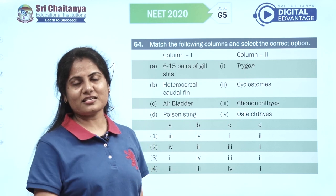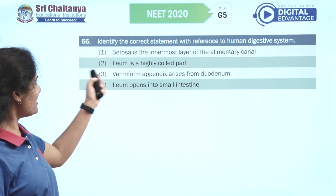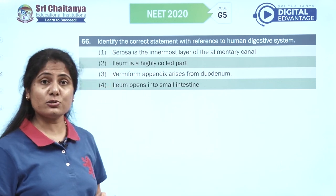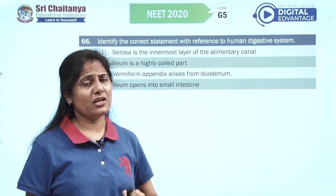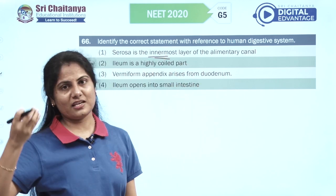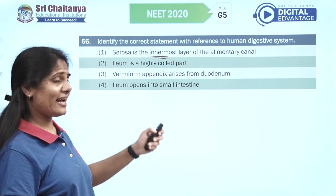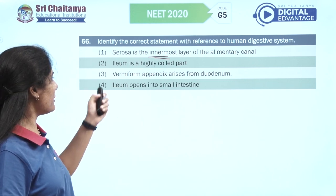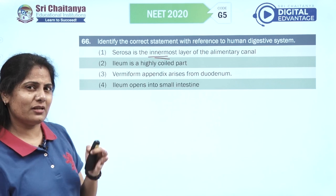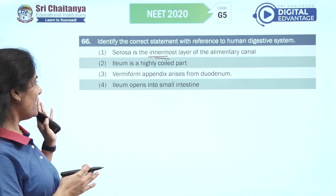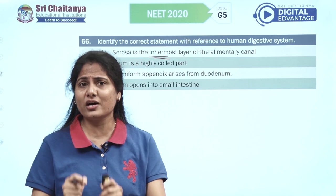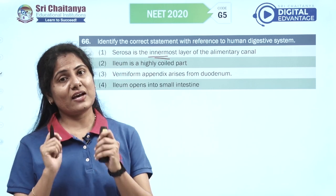Identify the correct statement with reference to the human digestive system. Serosa is described as the innermost layer — recall it's actually the outermost. Ileum is the highly coiled part — yes. Vermiform appendix arises from duodenum — no, it arises from the cecum. Ileum opens into the small intestine — no, ileum opens into the large intestine. Very important to read every word carefully. The second option is the right option.